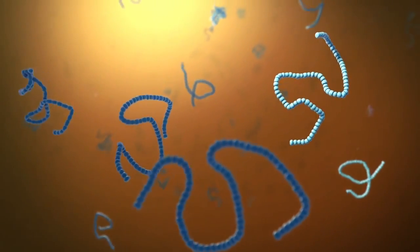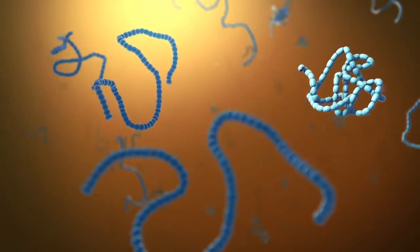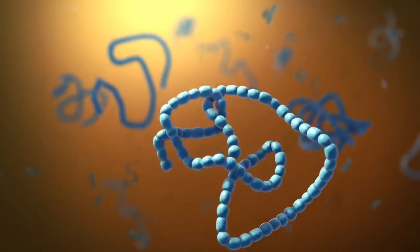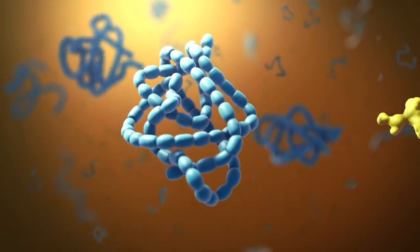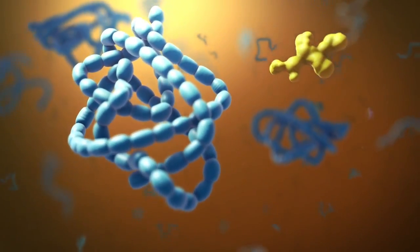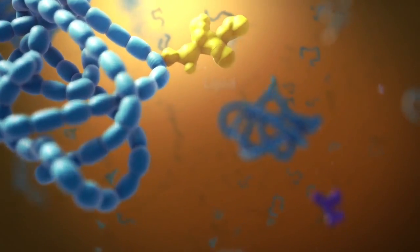As proteins move through the Golgi body, they're customized into forms that the cell can use. The Golgi body does this by folding the proteins into usable shapes or adding other materials onto them, such as lipids or carbohydrates.